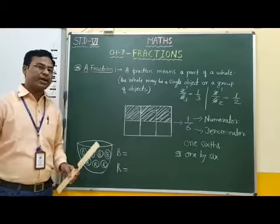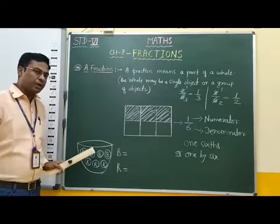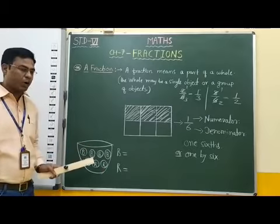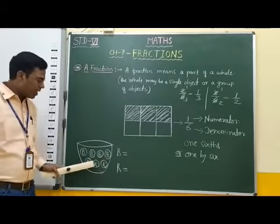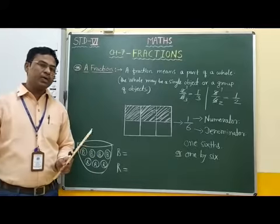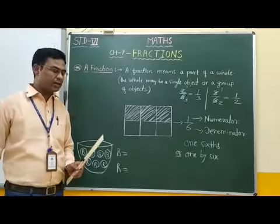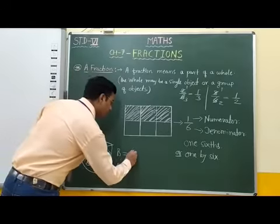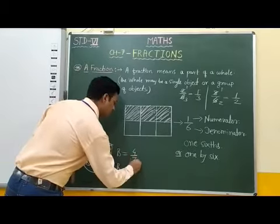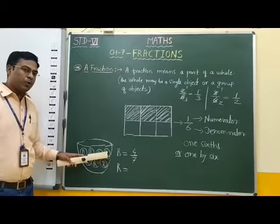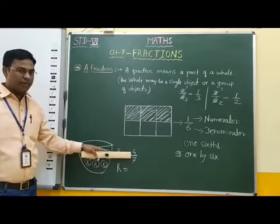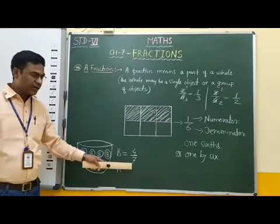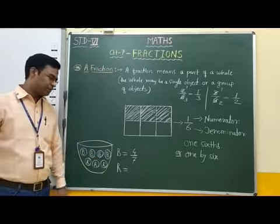Let's take another example. If in a bucket there are 7 balls, and among these 7 balls 4 are blue and 3 are red, then the fraction of each color of balls is: the fraction of blue color balls is 4 by 7, because there are 4 blue balls so the numerator is 4, and total balls are 7 so the denominator is 7.